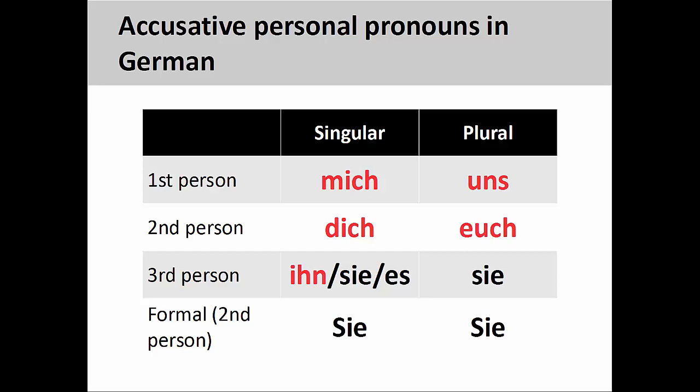The accusative personal pronouns in German are similar to the nominative pronouns, with the exception of the pronouns you see here in red. These are first- and second-person singular and plural pronouns, as well as the masculine third-person singular pronoun. You'll recall that the masculine definite article, der, is the only one that changes as it moves from nominative to accusative, so it makes sense that masculine personal pronouns follow the same pattern.